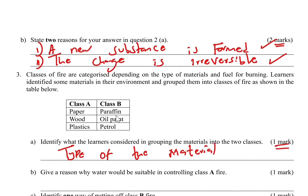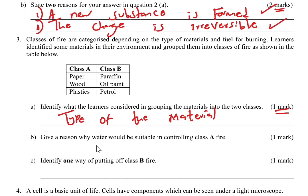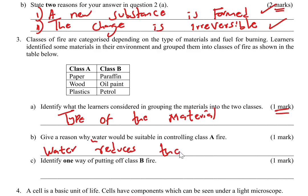Part B: give a reason why water will be suitable in controlling Class A fire. Class A fire is caused by solids like paper, wood, and plastic. Water is used because water removes or reduces the heat — it decreases the temperature. That is why we use water for Class A fire. You score one mark.